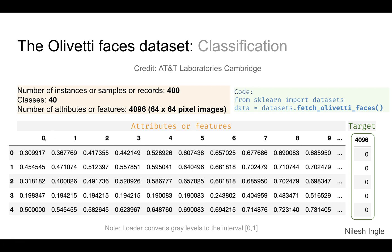As you can see in the dataframe, columns zero through nine are shown but they go all the way up to 4096. Column 4096 is the target column, since we start at zero so 4095 is the last pixel for each image. The target column has 40 classes. Here's a short code snippet showing how to load this dataset.